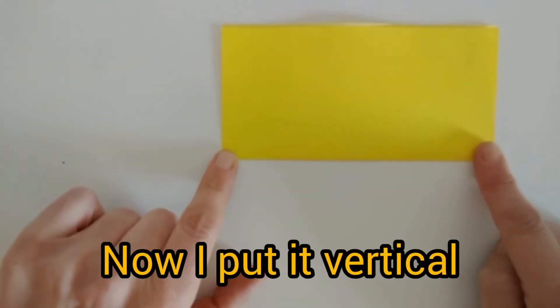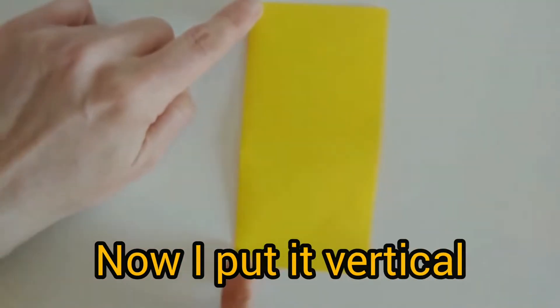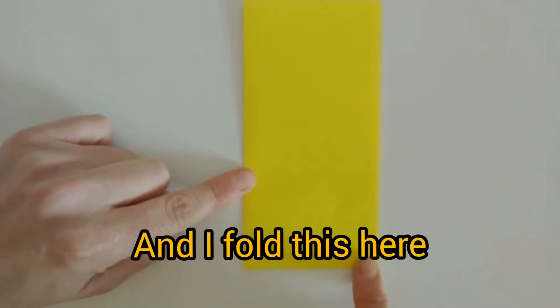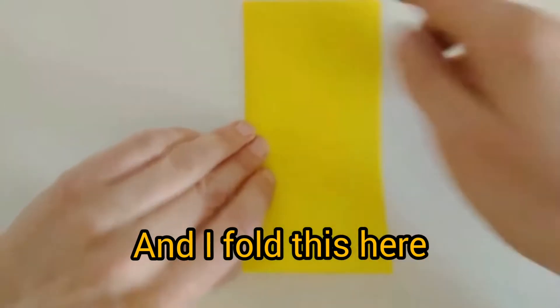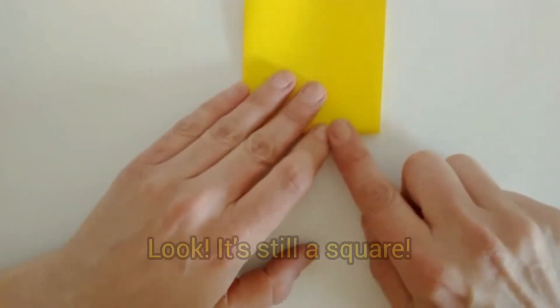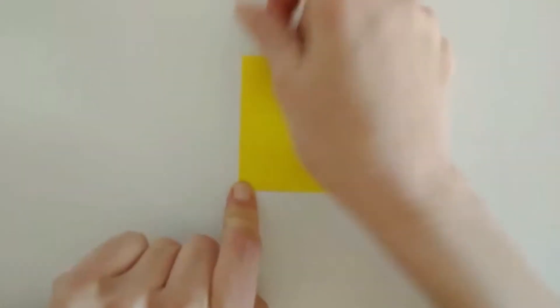Now I put it vertical. And I fold this here. Look! It's still a square but it's smaller.